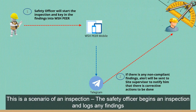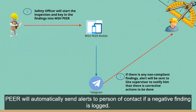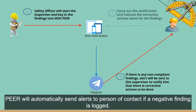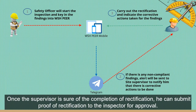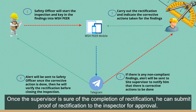Here is a scenario of an inspection. The safety officer begins an inspection and logs any findings. Peer will automatically send alerts to the person of contact if a negative finding is logged. Once the supervisor is sure of the completion of rectification, he can submit proof of rectification to the inspector for approval.